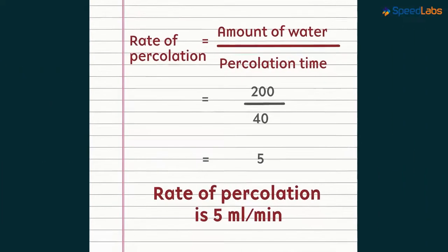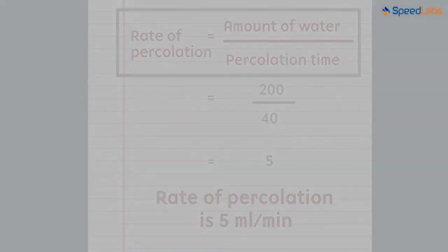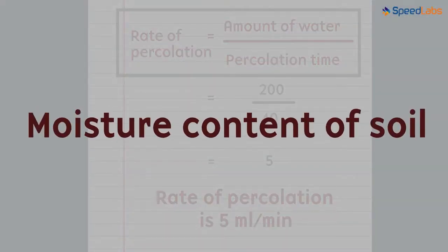This is how we calculate the percolation rate of water in the given water sample. Next, let's take a look at the last property that is moisture content in the soil.